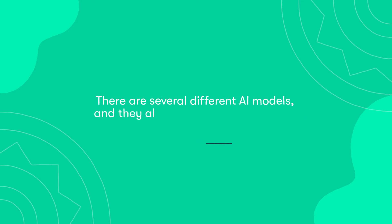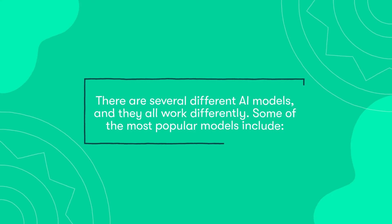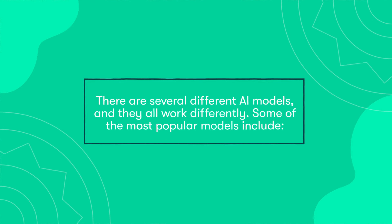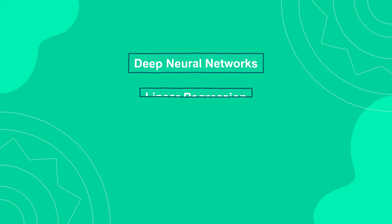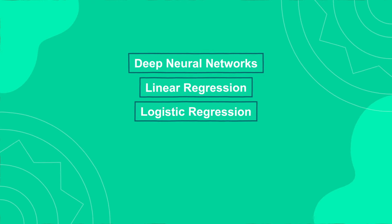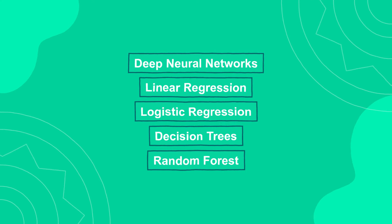With that clear, we can talk about standard AI models. There are several different AI models, and they all work differently. Some of the most popular models include Deep Neural Networks, Linear Regression, Logistic Regression, Decision Trees, and Random Forest.